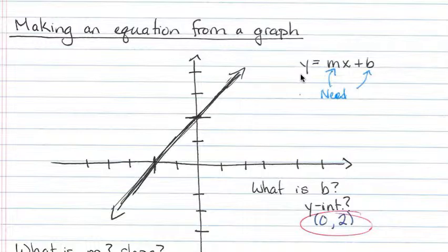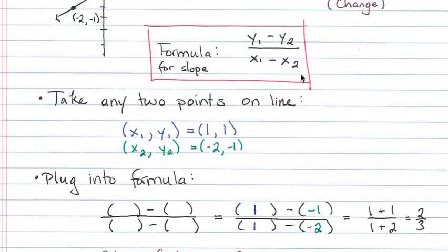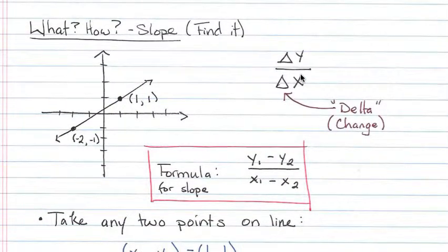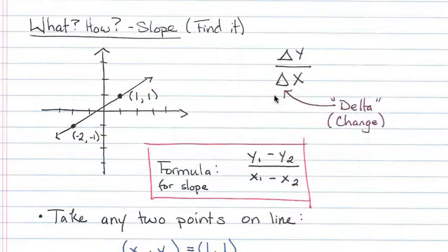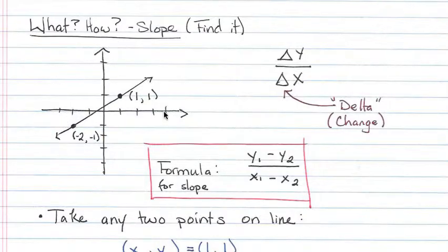There are two things you're going to need to know how to do. The first of them is how to find slope. Slope is the thing that describes whether it's going up or down quickly or slowly, and we need to figure out how to make a number that represents this slope. How we do that is we take this idea: delta y over delta x. Delta is a Greek letter and it means change. So basically what we're saying is the change in y over the change in x — how much it changes vertically versus horizontally — which describes how much it's going up or down.